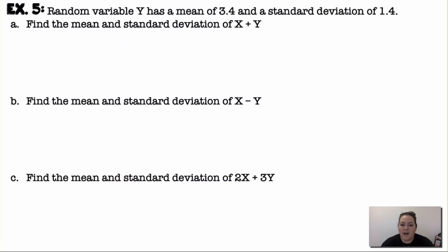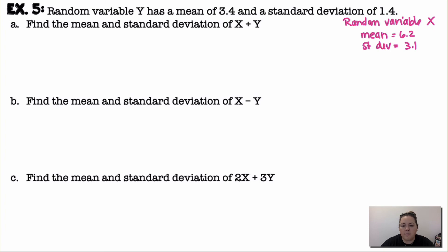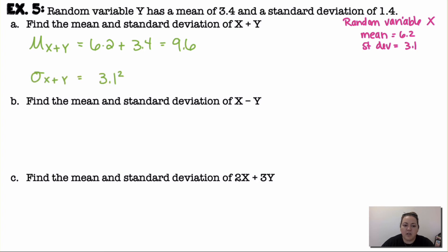Random variable y has a mean of 3.4 and a standard deviation of 1.4. To find the mean of x plus y, add the means: 6.2 plus 3.4 equals 9.6. For the standard deviation of x plus y, square each standard deviation, add them, then take the square root: √(3.1² + 1.4²), giving approximately 3.401.